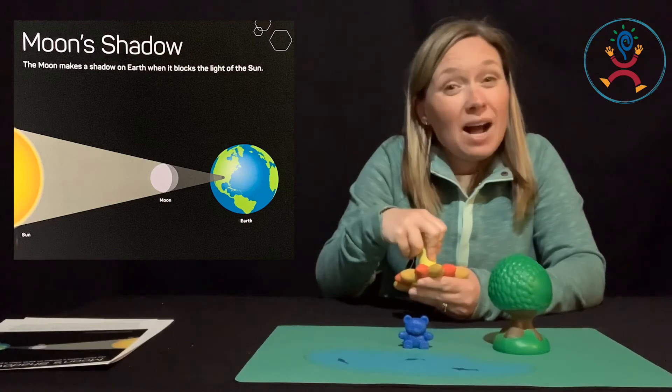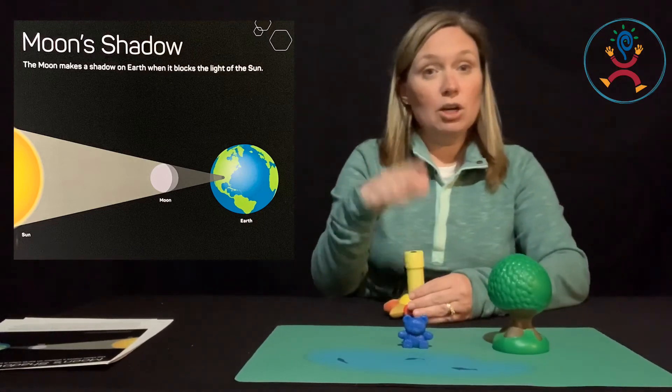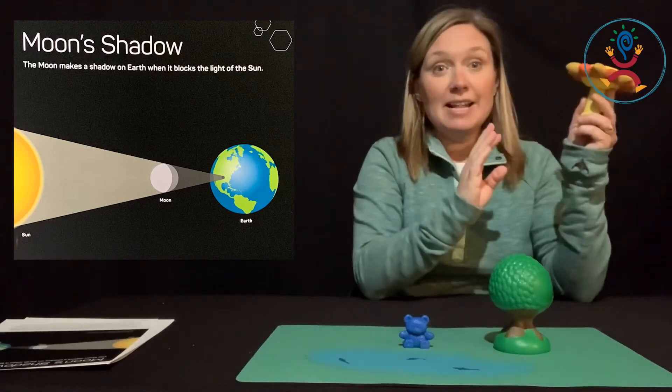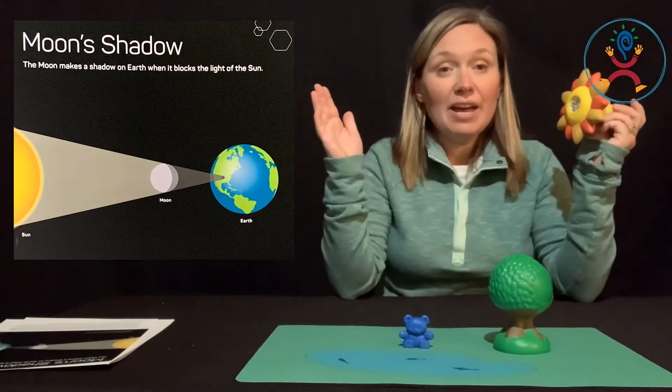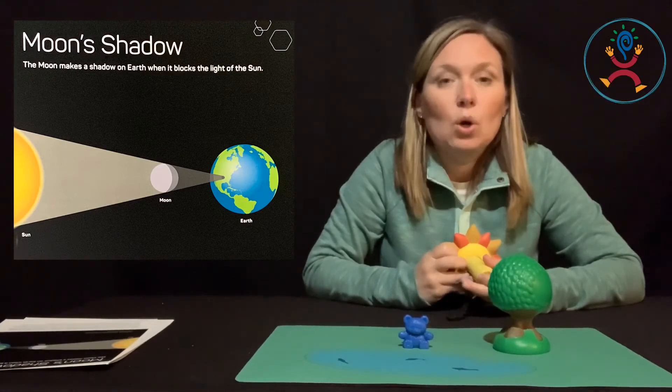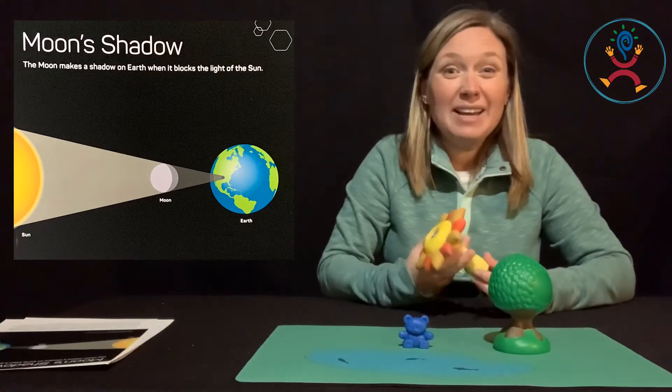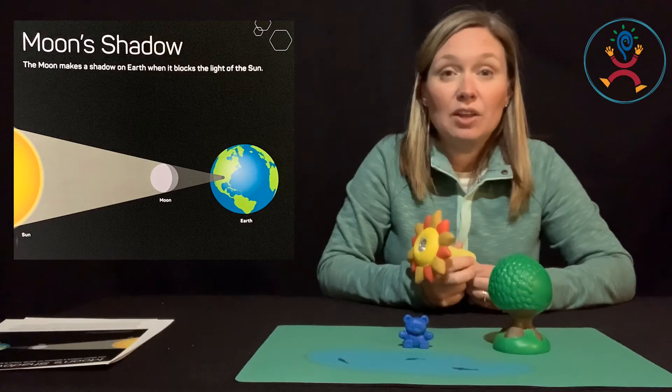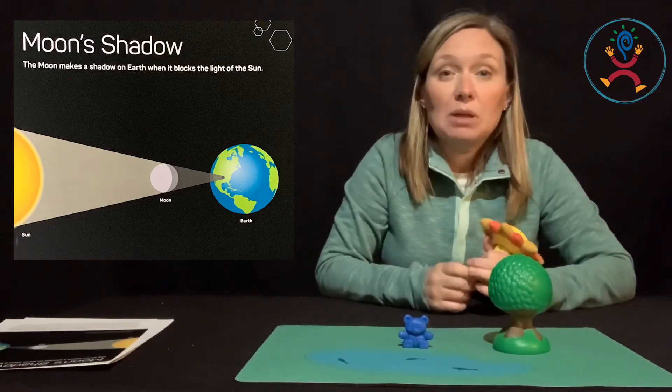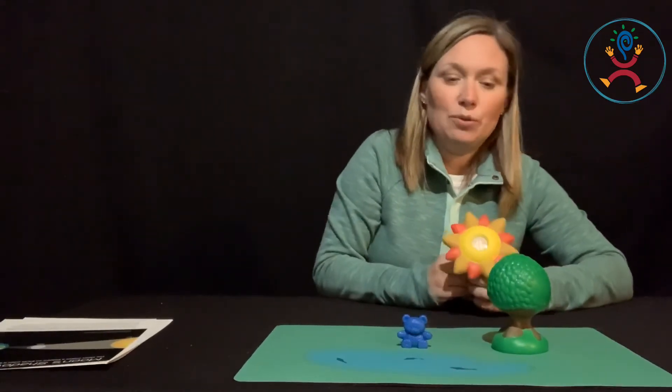And every once in a while, a really special thing happens where the moon goes between the sun and the earth. And we get something called a solar eclipse, where the moon blocks the sunlight. And we might have a little bit of darkness on the earth when there should be light because the moon is blocking the sun's rays. So that is pretty cool. We had one a few years ago.